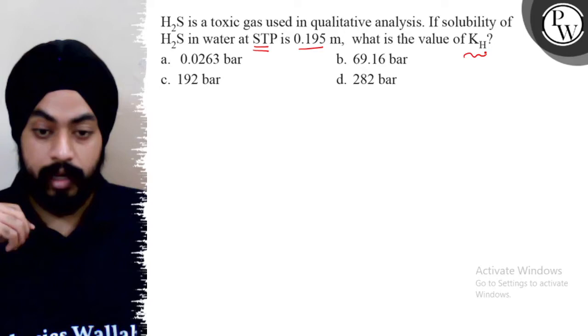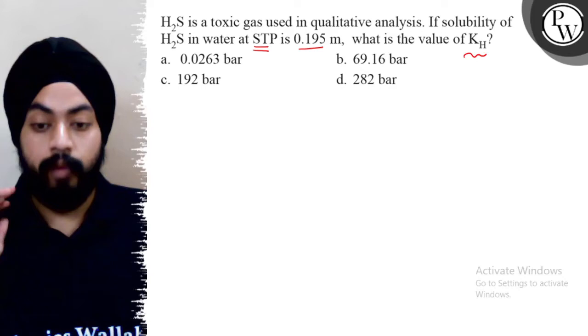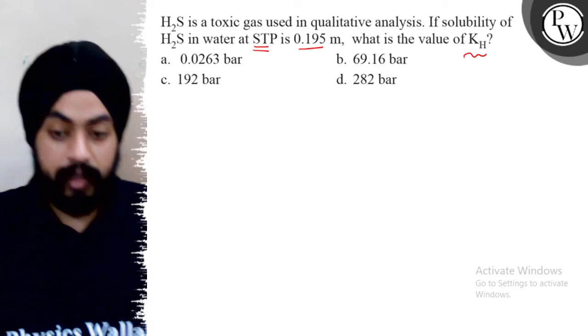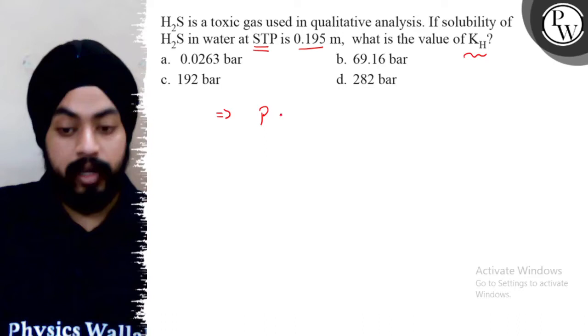I said that the solubility of H2S is 0.195 molal. Now if I look at KH, if I look at the unit, I will give all the options in bar. We mean that our history of Henry's law is going to be this form: pressure P equals KH into X.